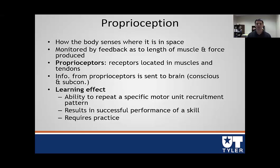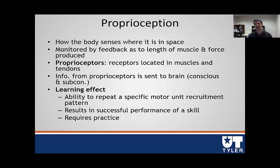Let's talk about proprioception. Simply, we can define proprioception as a very general concept of how the body senses where it is in space. While this is something that we take for granted, our body really needs this in order to have any clue on how to perform daily actions. You can do a very brief demonstration on yourself—close your eyes, lift your arms, and you actually have a pretty good grasp on where your arms are at all points in time. That's because your muscles are sending signals to your brain.